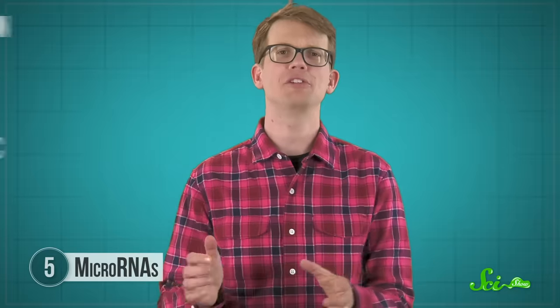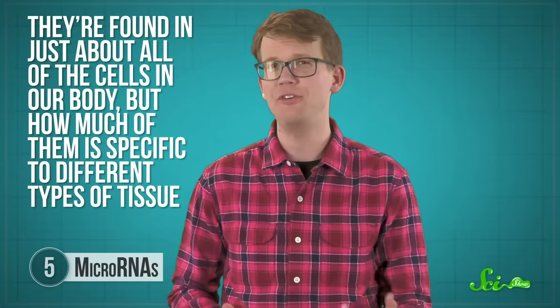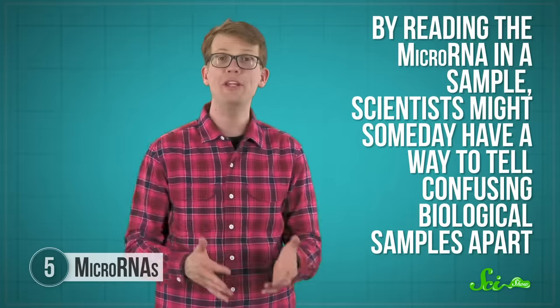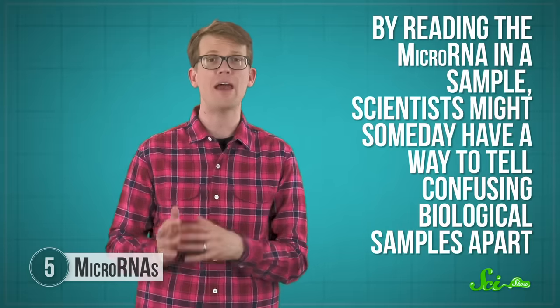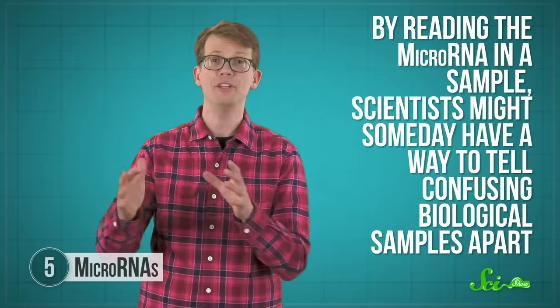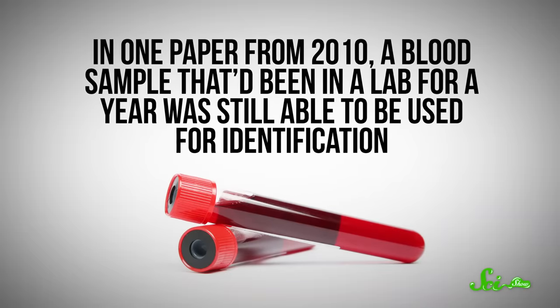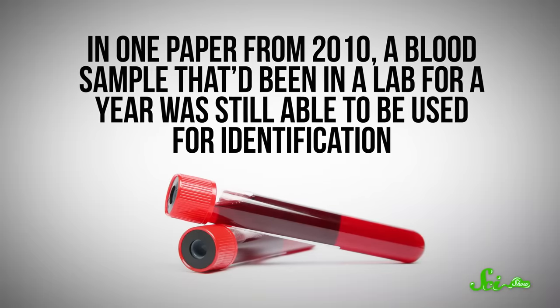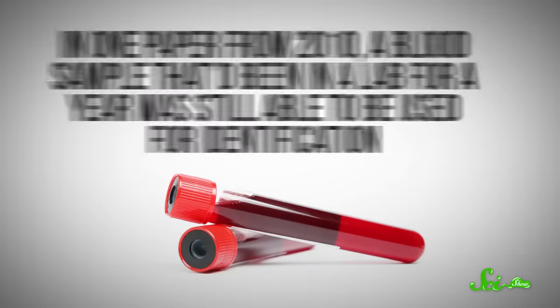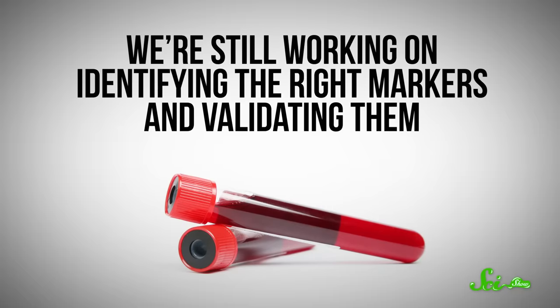What's interesting about these microRNAs is that they're found in just about all of the cells in the body, but how much of them — how they're expressed — is specific to different types of tissue. So by reading the microRNA in a sample, scientists might someday have a way to tell confusing biological samples apart, or figure out that a particular stain is a mix of two things. Also because they're so small, they're less prone to breaking down and degrading over time, at least theoretically. In one paper from 2010, a blood sample that had been in a lab for a year was still able to be used for identification. We're still working on identifying the right markers and validating them, though, so they're not super useful yet.